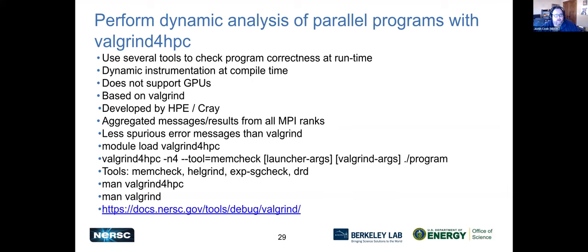Valgrind for HPC is based on Valgrind with additions from HPE Cray. It aggregates results from MPI ranks and has improved messaging over standard Valgrind. It acts like the NVIDIA sanitizers, allowing you to check for memory errors, uninitialized variables, and similar issues. There's good coverage in both the man pages and in the NERSC docs.